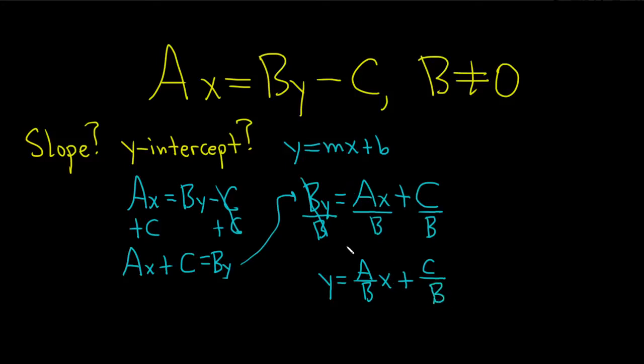Now we can use matching. We know this is in the form Y equals MX plus B, and M is the slope. So lowercase m equals A over B. That is the slope, and that's one of our answers.